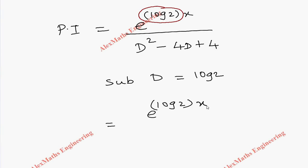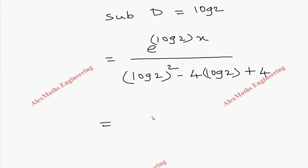By substituting this, we get the numerator as it is, and the denominator becomes (log 2)² - 4·log 2 + 4. But the denominator can be written as (a - b)² form, so we can write it as (log 2 - 2)².